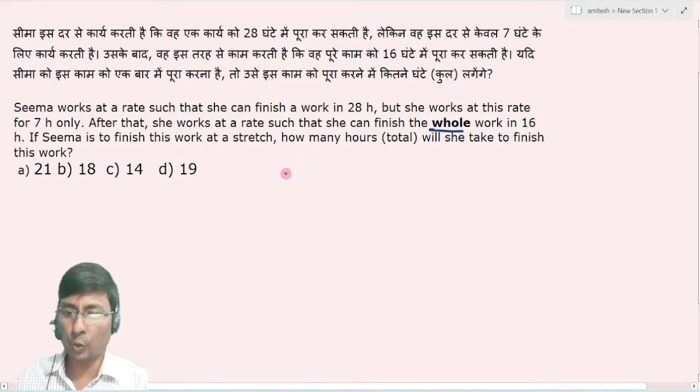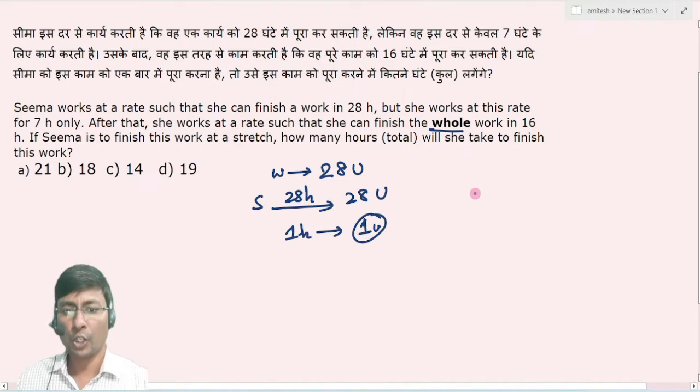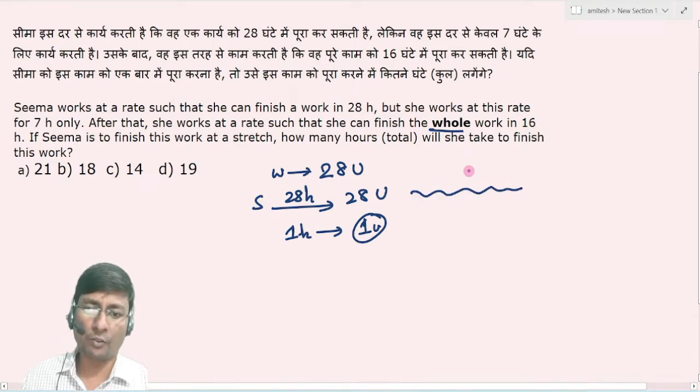Assume कर लो कि total work कितना है? वो है 28 unit. So Seema अगर 28 hours में 28 unit काम करती है, तो उसकी efficiency कितनी होगी? वो 1 hour में simply 1 unit काम करेगी. तो 7 hours में वो कितना काम करेगी? Simply 7 unit.